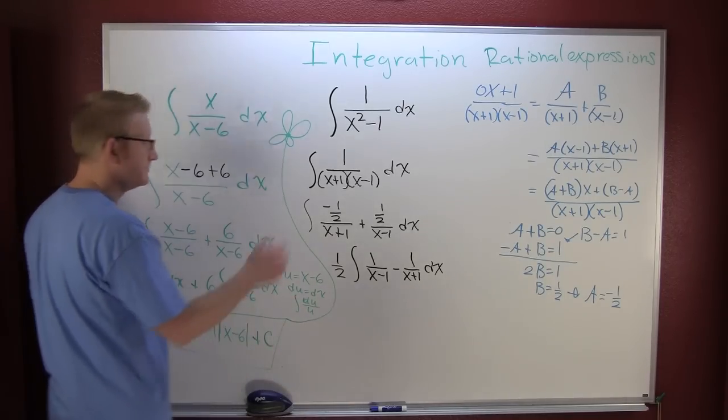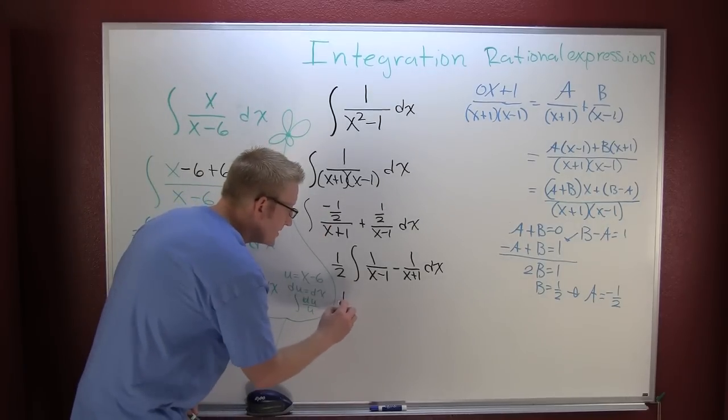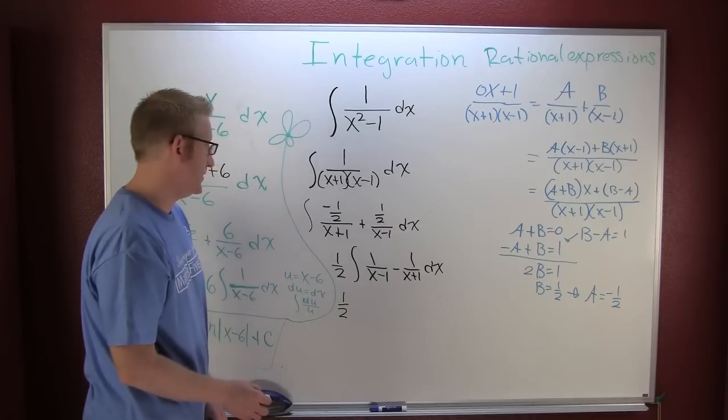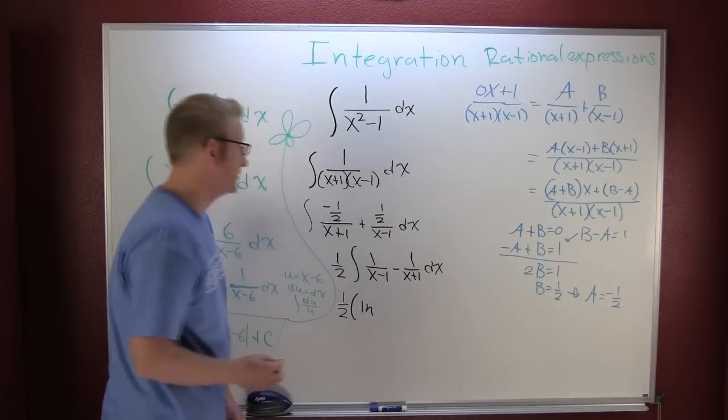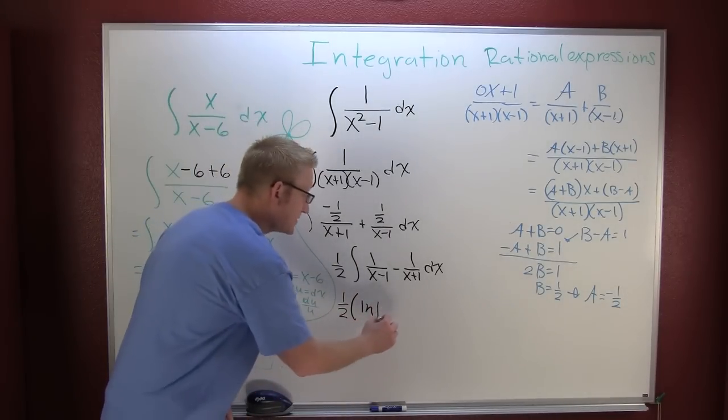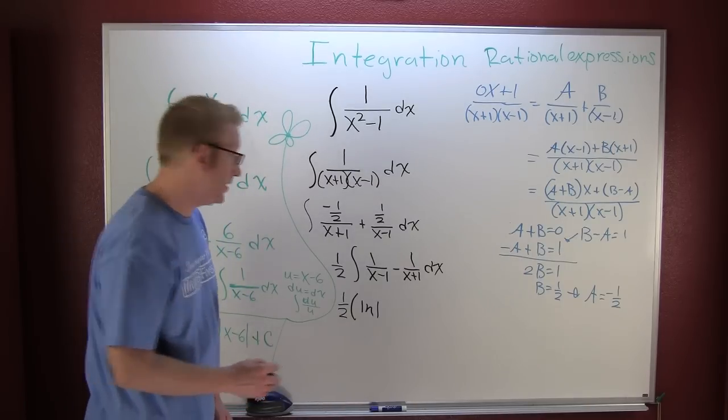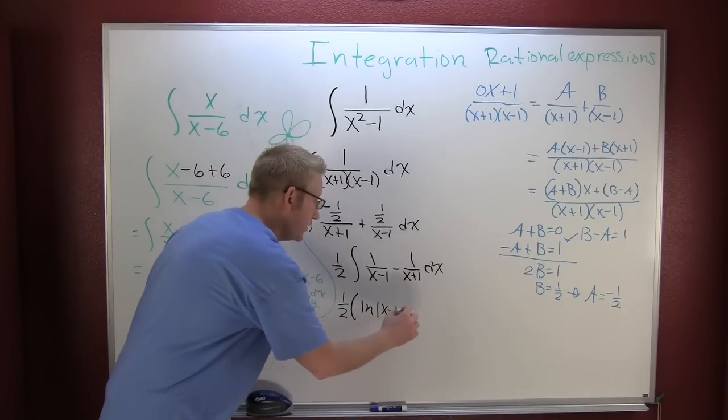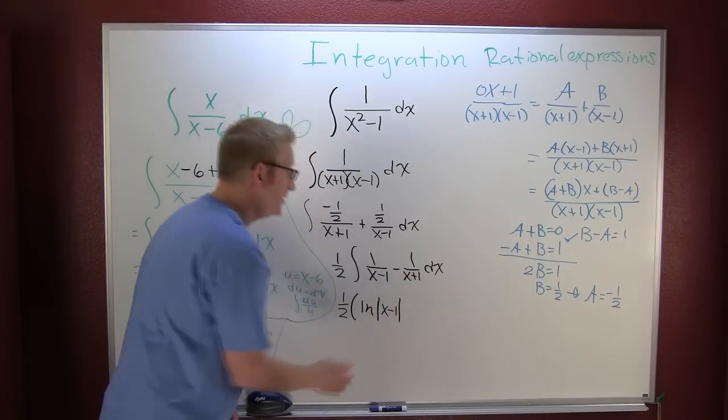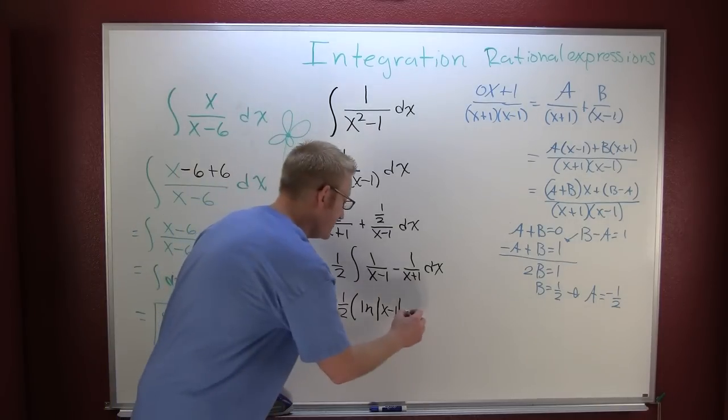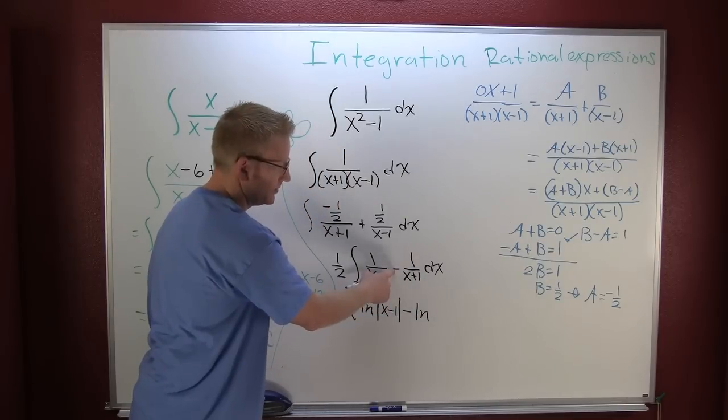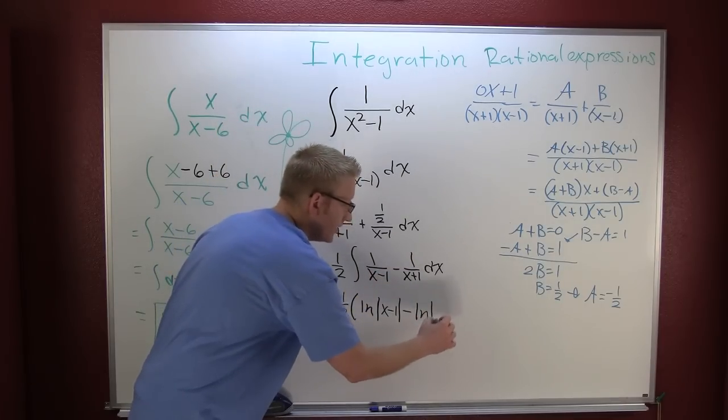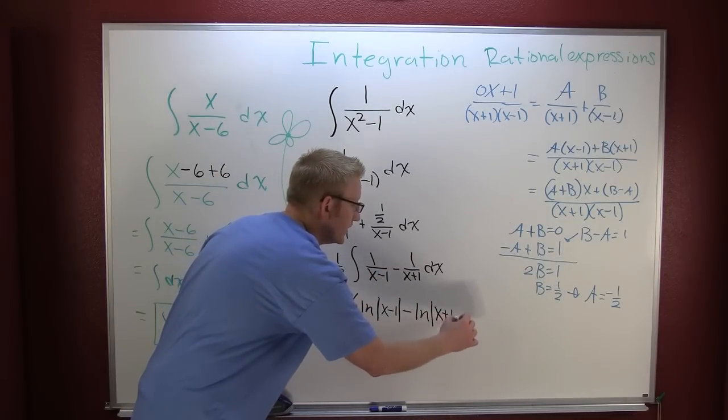And then in both those situations you get the natural log. So this is one half, the natural log of the absolute value of x minus 1, minus the natural log of the absolute value of x plus 1.